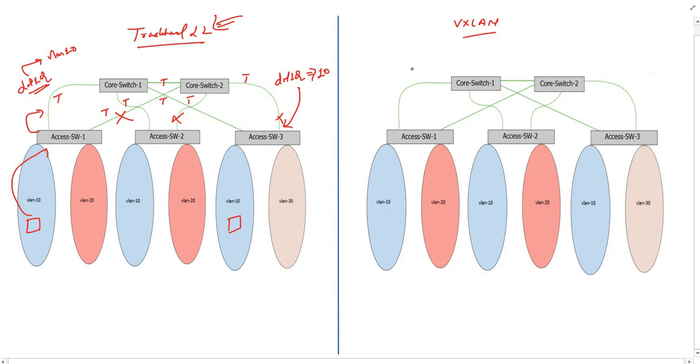Now, consider the right-hand side diagram. Here, I have converted all these layer 2 trunk links to layer 3. Every link now has an IP address configured on it. I have also configured a routing protocol on all layer 3 links.